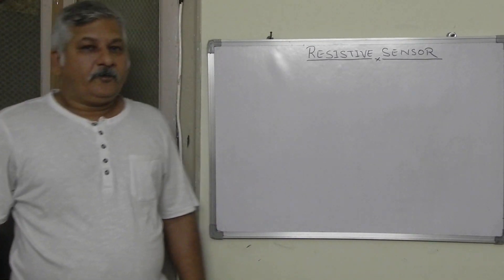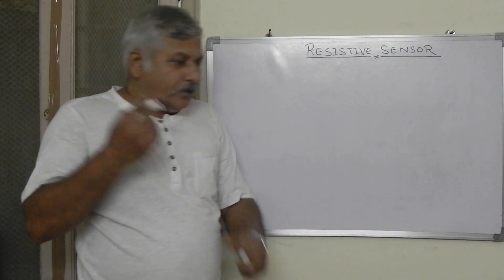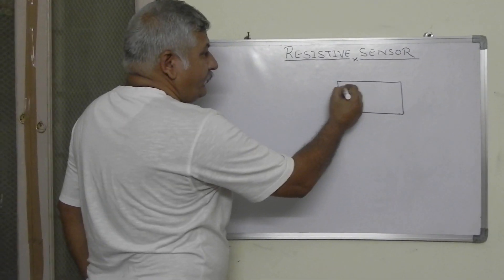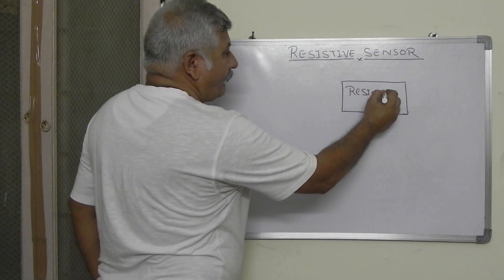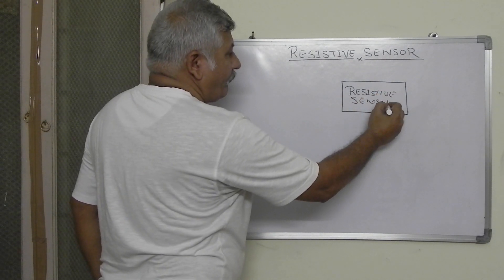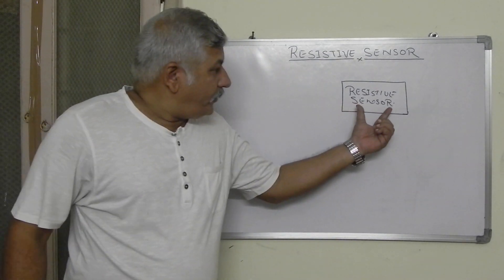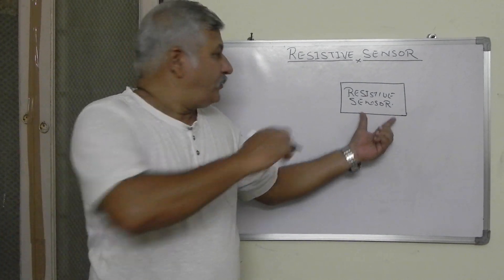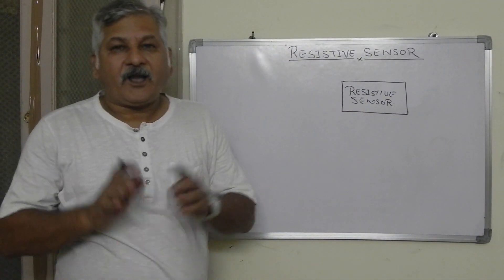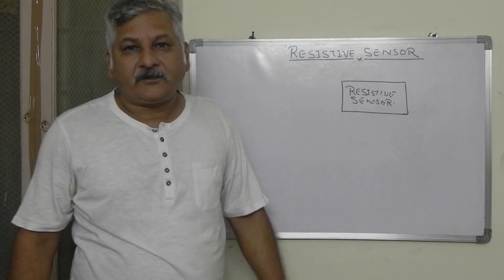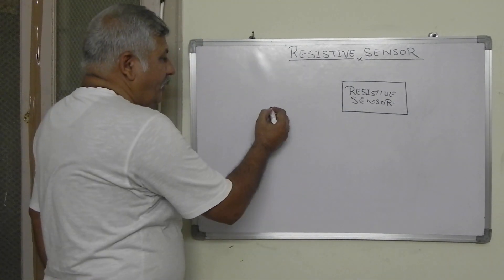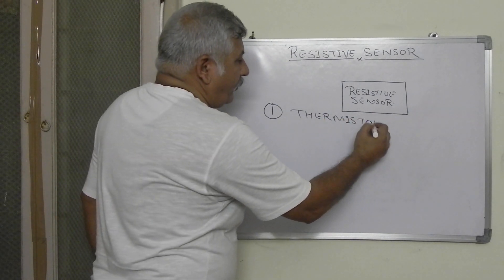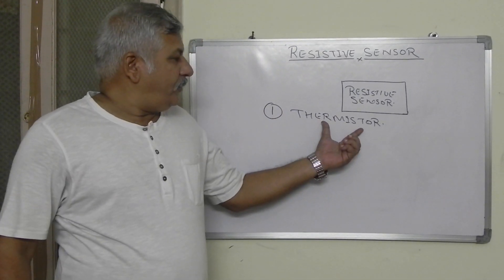Today we will discuss about a resistive sensor. The resistance of a resistive device varies with reference to the surrounding atmosphere. If this happens, then we can say that it is a resistive sensor. For example, a thermistor is an example of a resistive sensor.